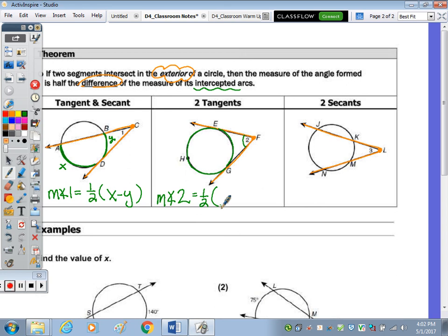subtract the measure of the inner arc, which is E, G. And then since we're not looking at the whole circle here, I'm going to call this arc X, this arc Y. So the measure of angle 3 equals one half of X minus Y.